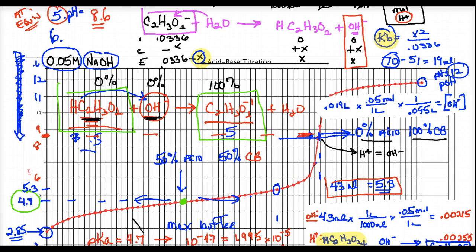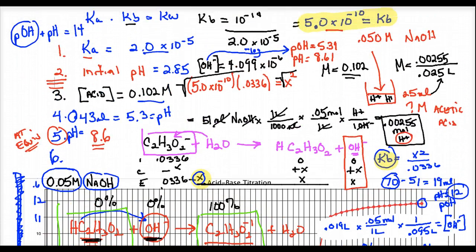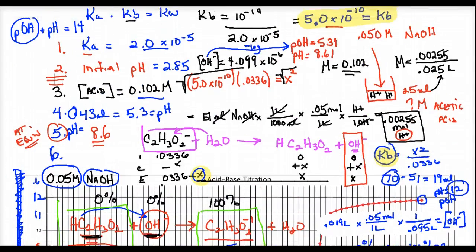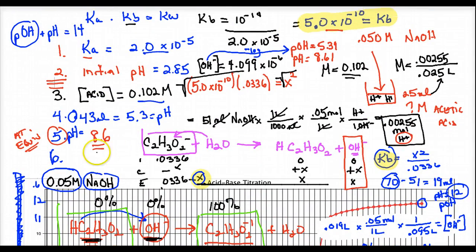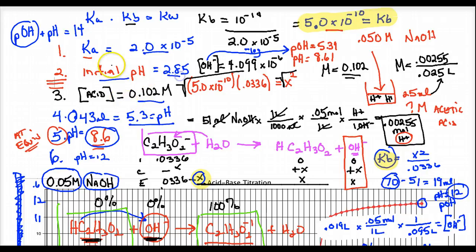Those are the things we accomplished with the weak acid strong base titration: the final pH verified at 12, the equivalence point pH at 8.6, a point between max buffer and equivalence at 43 mL, the concentration of the acid at 0.102 M, the initial pH at 2.85, and the Ka of acetic acid at 2.0 × 10⁻⁵.